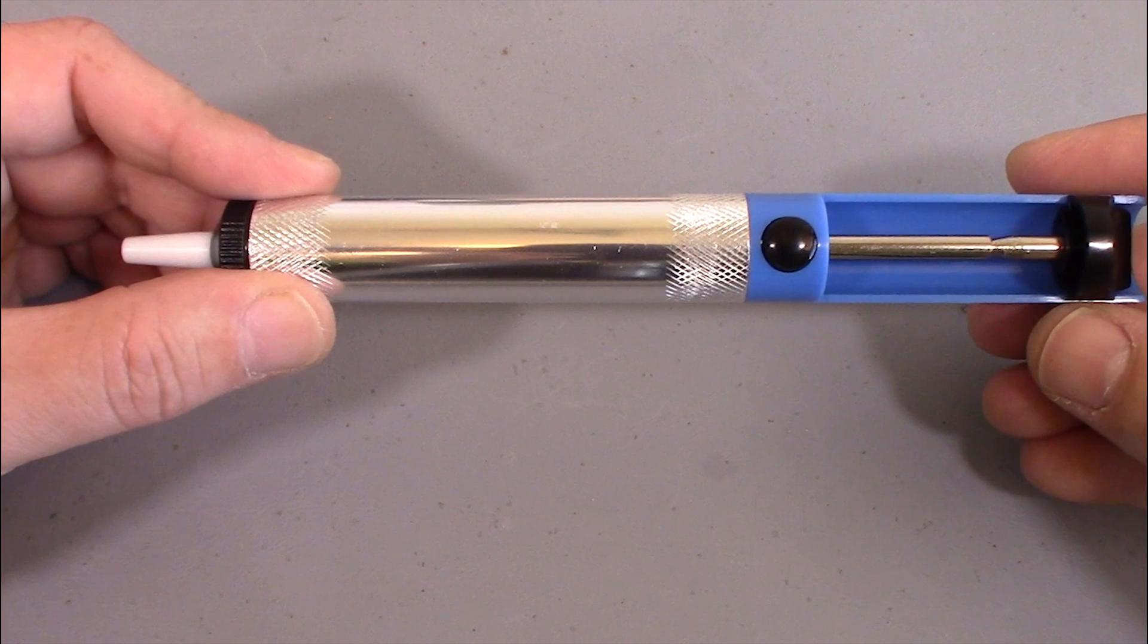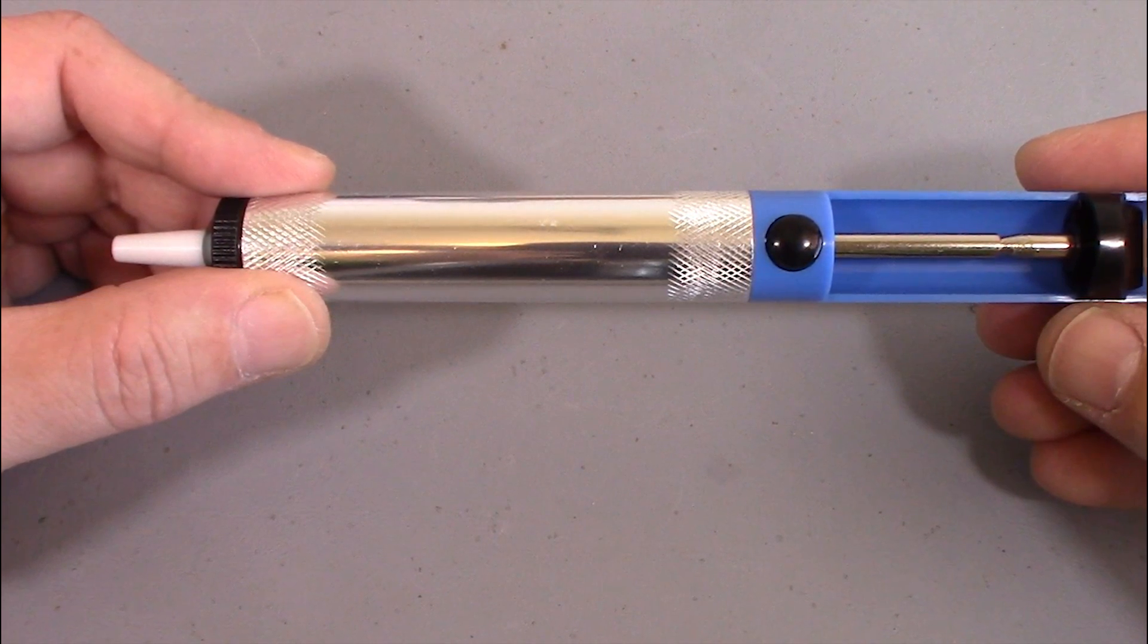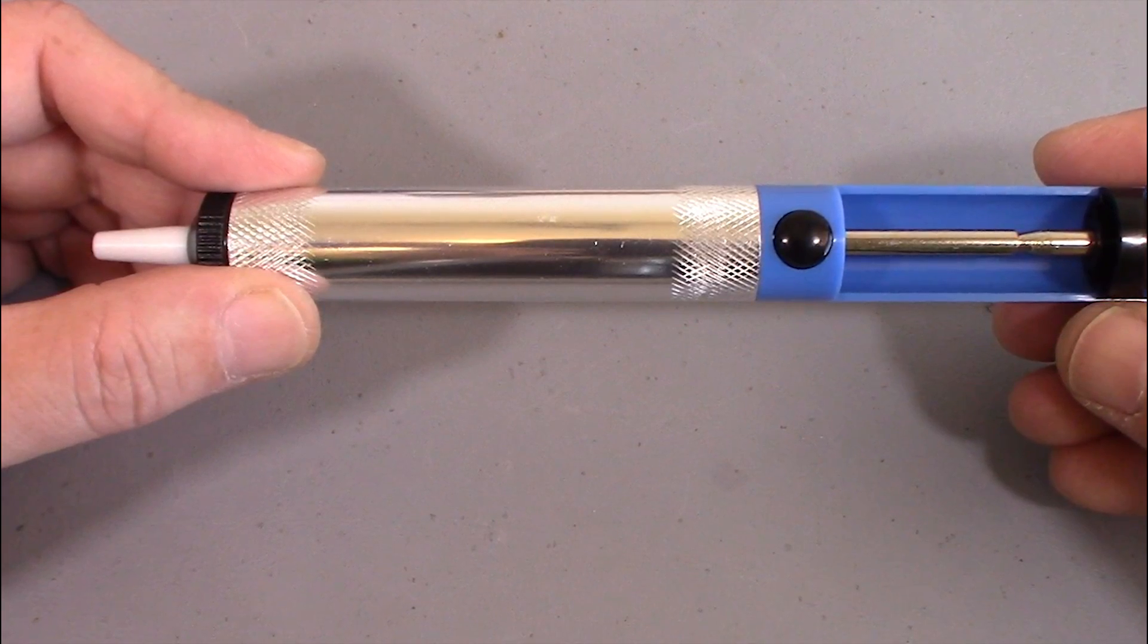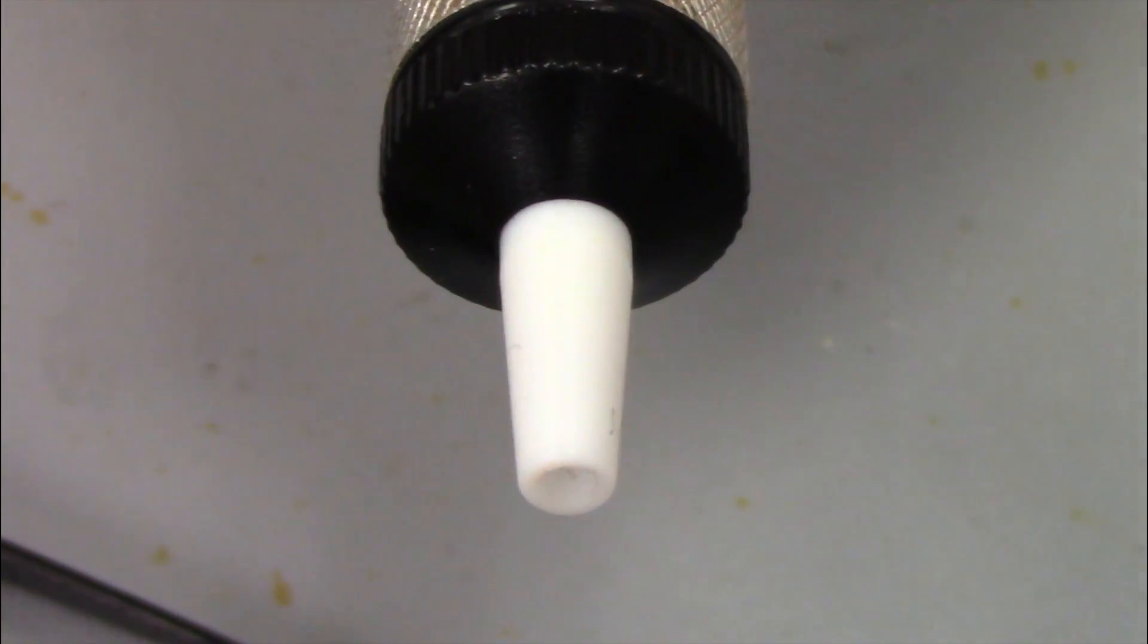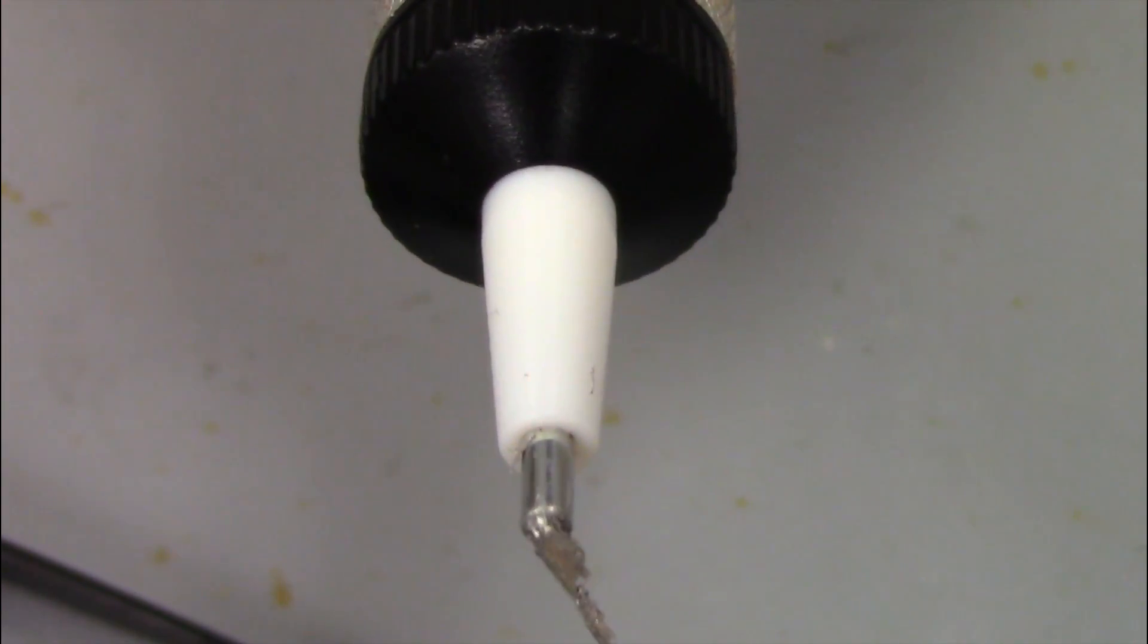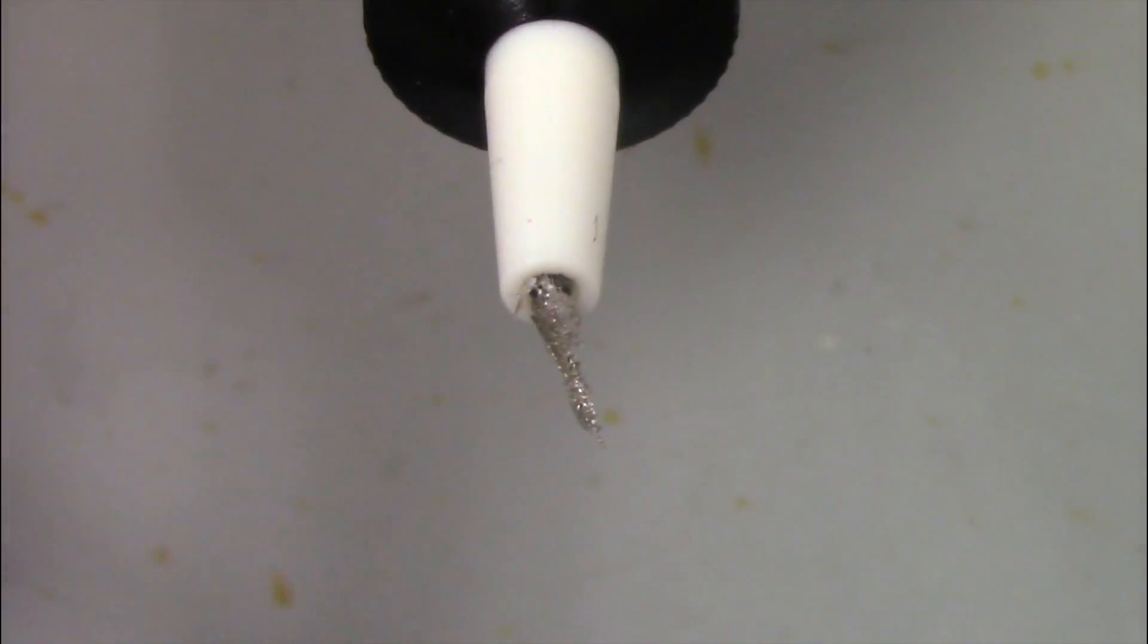We'll use a solder pump or solder sucker to desolder the other side of the resistors. This method works well for through-hole components. First, we'll need to see if the pump is clean. Push the plunger in as far as it will go and see if any solder comes out of the tip.